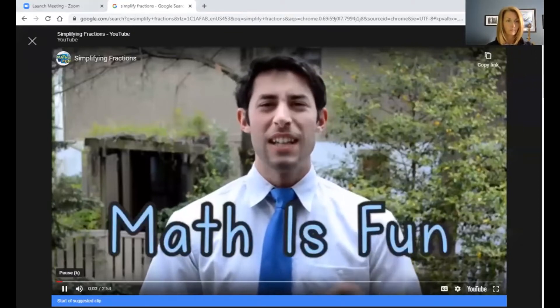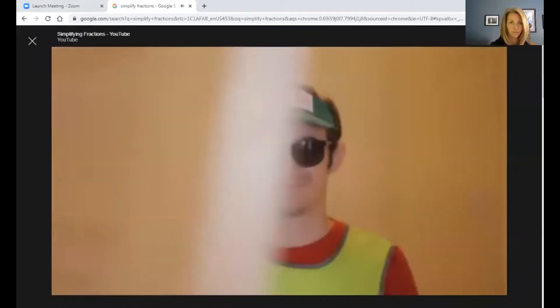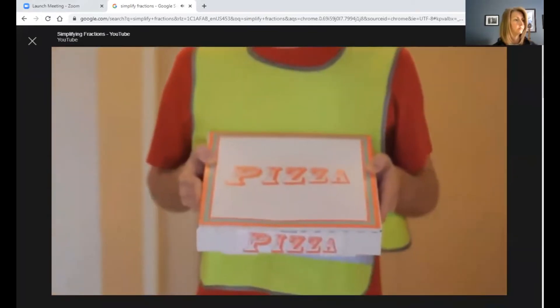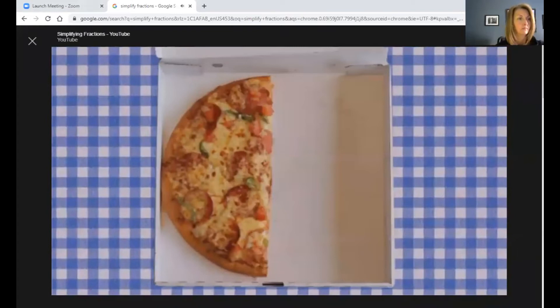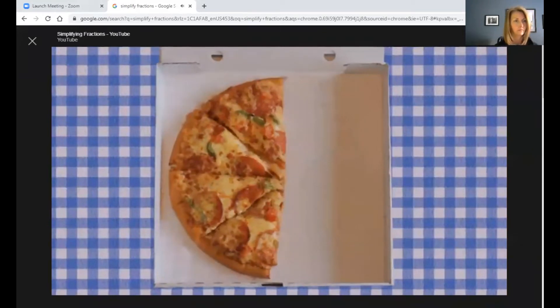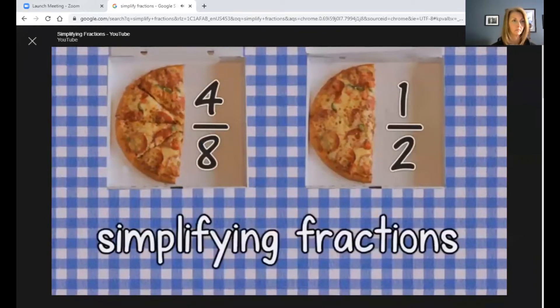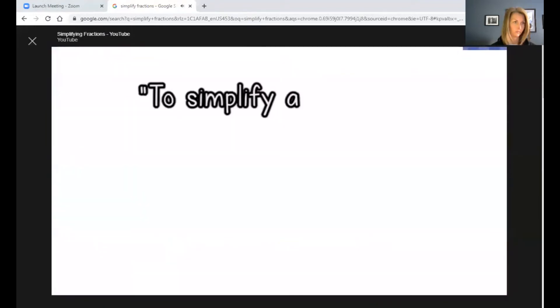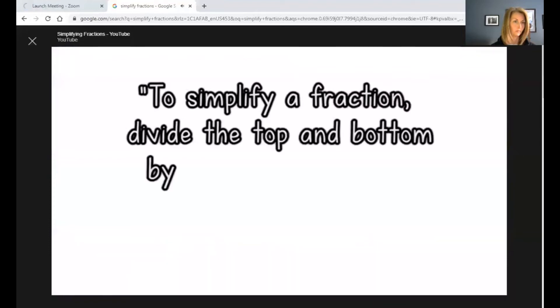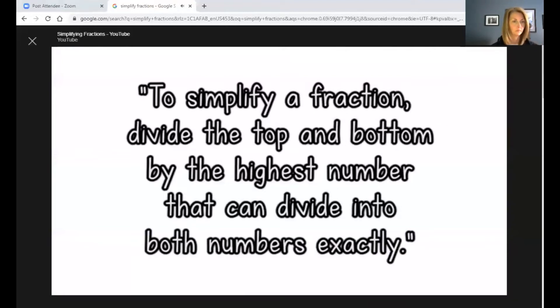Today on Math is Fun, let's enjoy learning about simplifying fractions. Let's get some pizza. Here are four-eighths of a pizza and two-fourths and a half. Why say four-eighths when you really mean half? Simplifying or reducing fractions means to make the fraction as simple as possible. To simplify a fraction, divide the top and bottom by the highest number that can divide into both numbers exactly. How do I simplify a fraction? There are two ways to simplify a fraction.